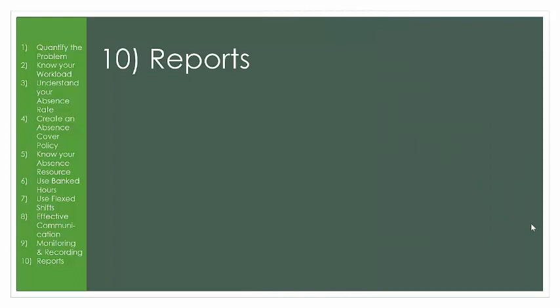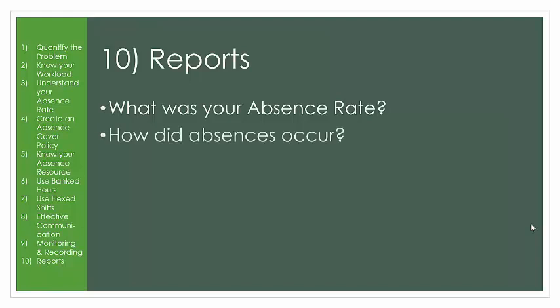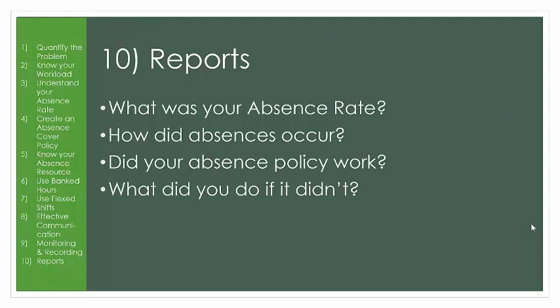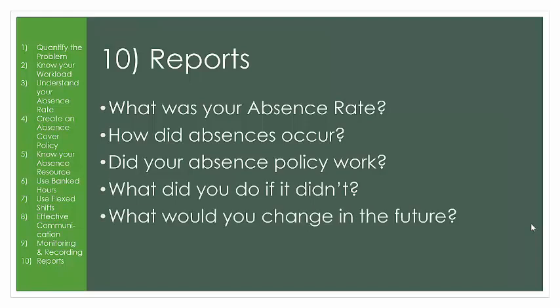Tip 10: Reports. You should review your absence policy each year to see if it is still working and if it fails at any point. You can calculate your absence rate — both Visual Roto X and the yearly planners do this for you automatically. Each year, you should plot your absences to see how they occurred, then compare each year to the last. Check if your absence policy worked or if it was implemented correctly. If there were any failures, how did you cope, and can you use that experience to improve your policies?